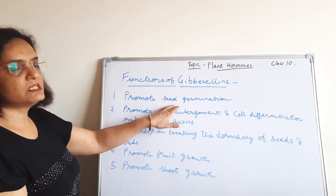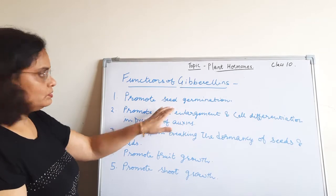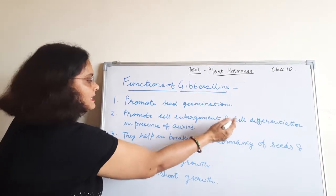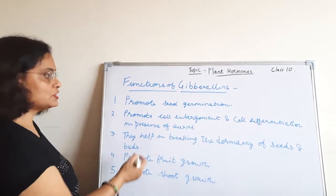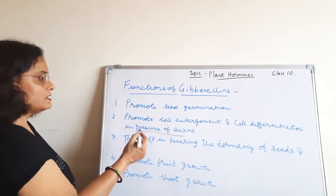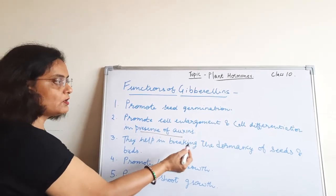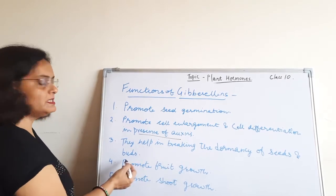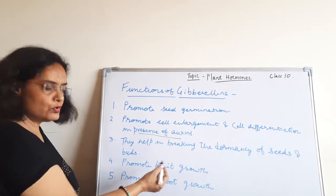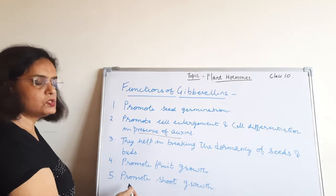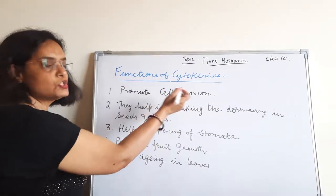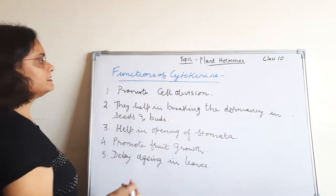The functions of gibberellins are: they promote seed germination, cell enlargement and cell differentiation in the presence of auxins. Gibberellins cause breaking of dormancy of seeds and buds, promote fruit growth, and also elongation of the shoot.